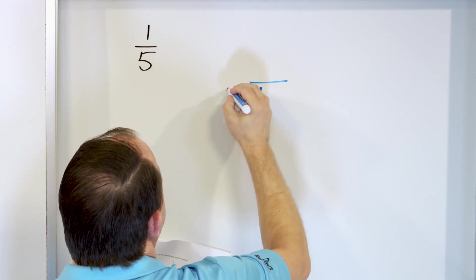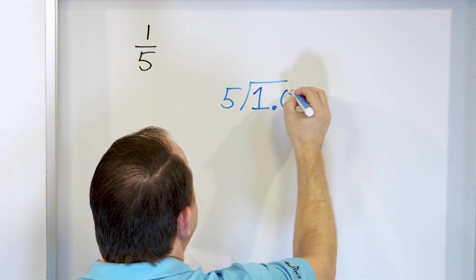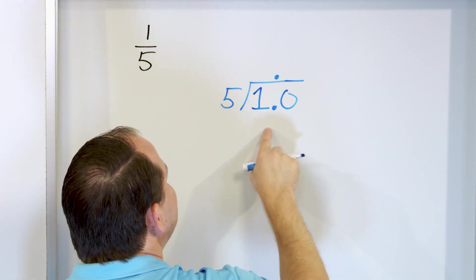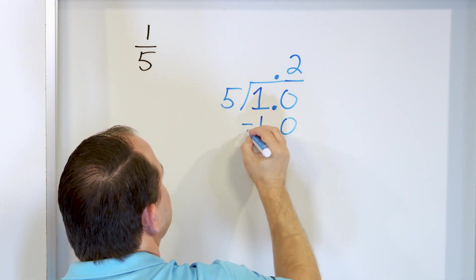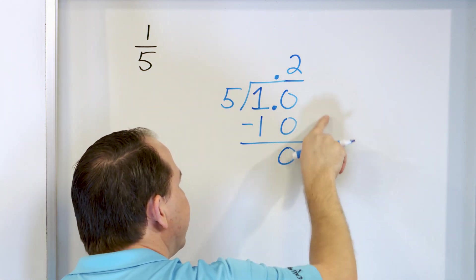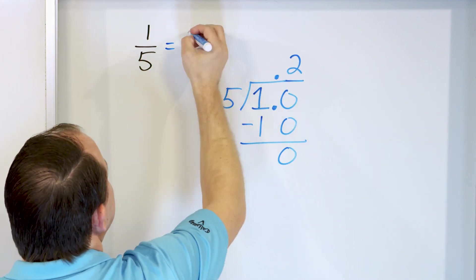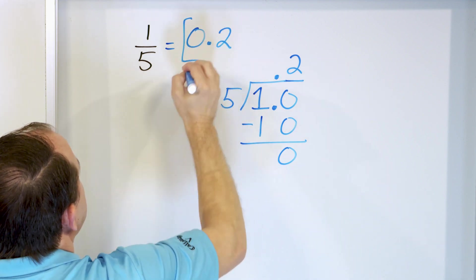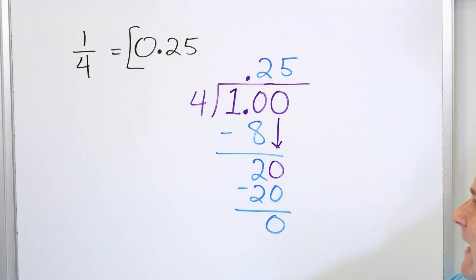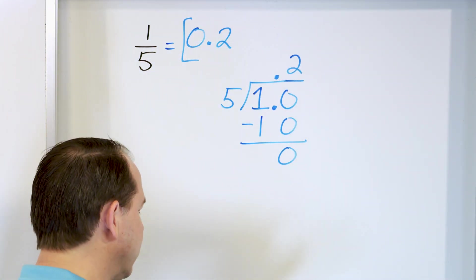1 divided by 5. Can 5 go into 1? No. So we drop our decimal, add a 0, and the answer will have a decimal right there. Can 5 go into 10? Yes — 5 times 2 is 10. Multiply 10, subtract — 10 minus 10 is 0. I got a remainder of 0, no more digits to bring down. So we know right away that 1/5 is equal to the decimal 0.2. That may be one you don't remember — 1/4 is 0.25, but 1/5 is the exact decimal 0.2.